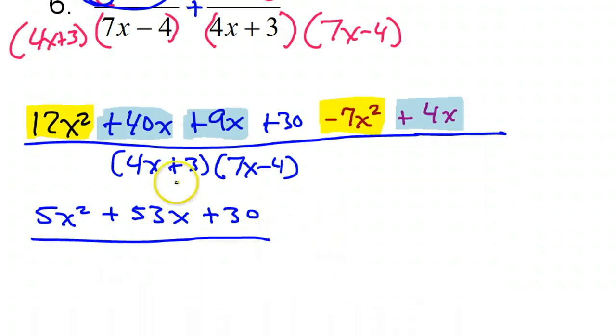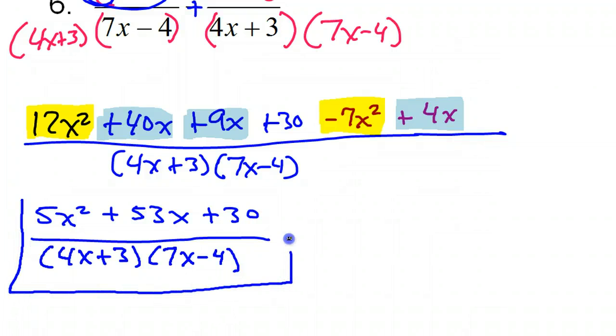Alright, and that is all over this denominator still. 4x plus 3 times 7x minus 4. Now, we could try to factor this. But, spoiler alert, it does not factor. So, this is the final answer.